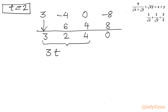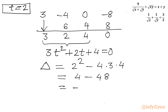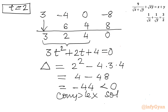So the quadratic factor is 3t² + 2t + 4 = 0. Checking its discriminant: b² − 4ac = 4 − 4(3)(4) = 4 − 48 = −44, which is negative. This gives complex solutions, so we reject this quadratic for real solutions. The only real solution is t = 2.